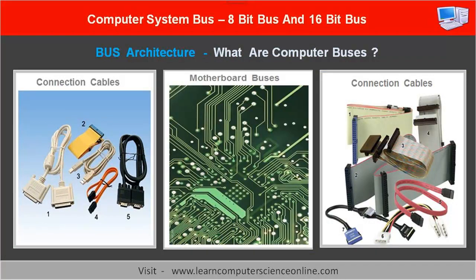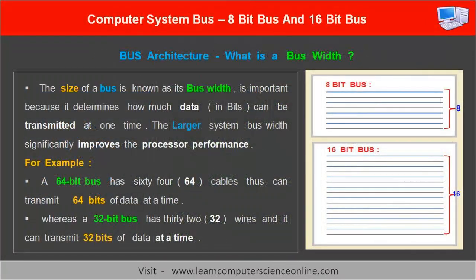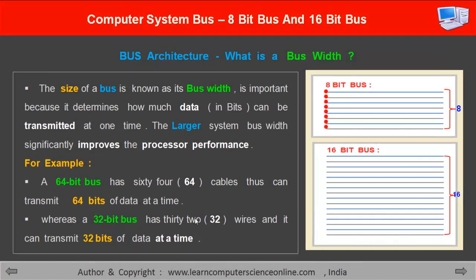The size of a bus can be measured in terms of its bus width. The bus width is an important performance parameter because it determines how much data, in terms of bits, can be transmitted at one time. The larger the system bus width, more data will be transferred, which significantly improves the microprocessor performance.